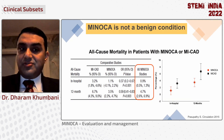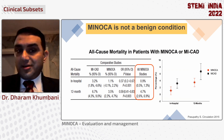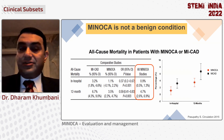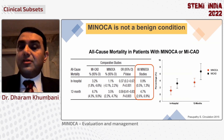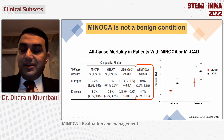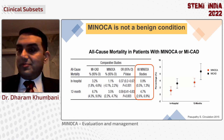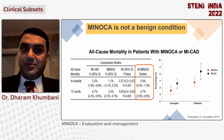MINOCA is not a benign condition. The mortality for patients with epicardial disease is around 3% at 30 days and 7% at a year, while the mortality for MINOCA patients is about 1% at 30 days and close to 4% at a year. So certainly not a benign condition compared with patients who don't have any of these problems.